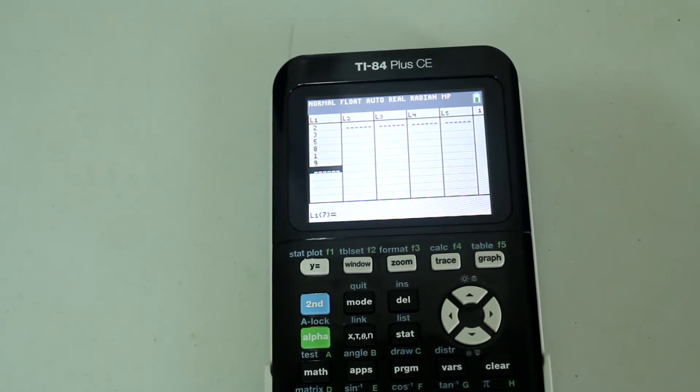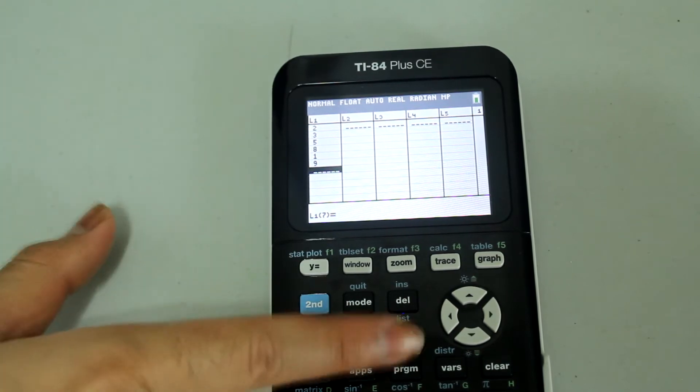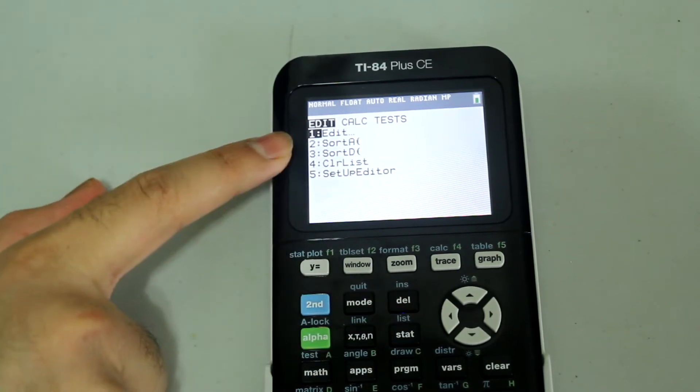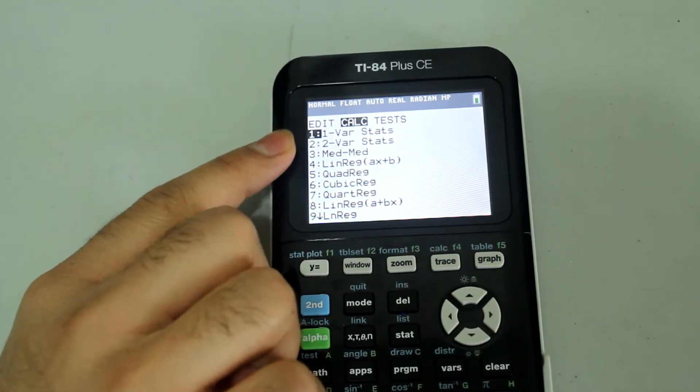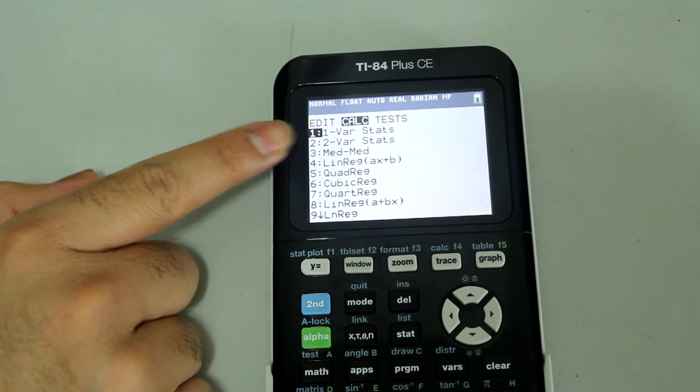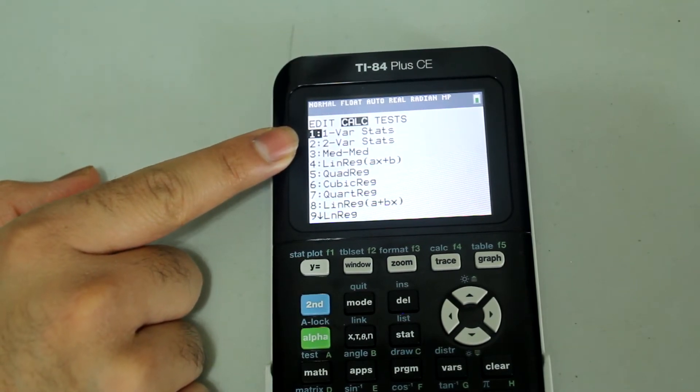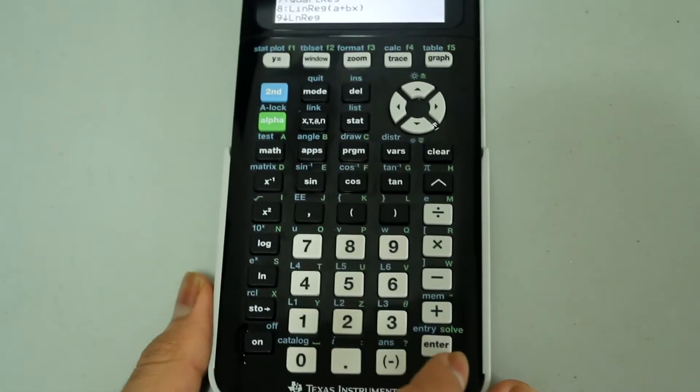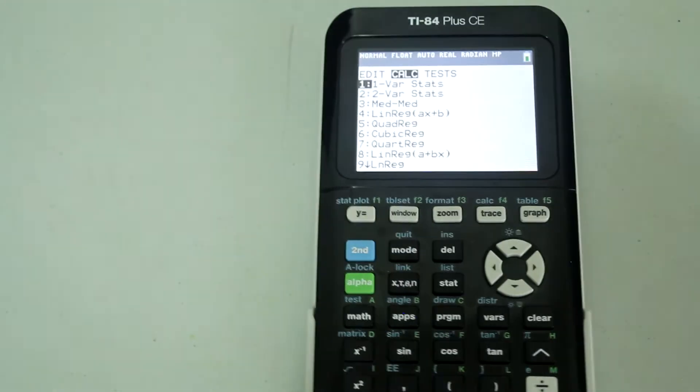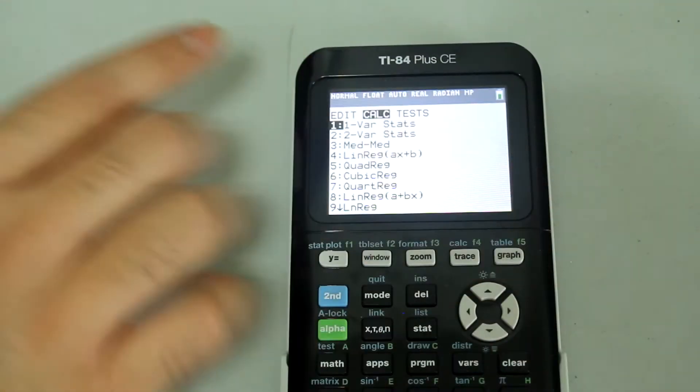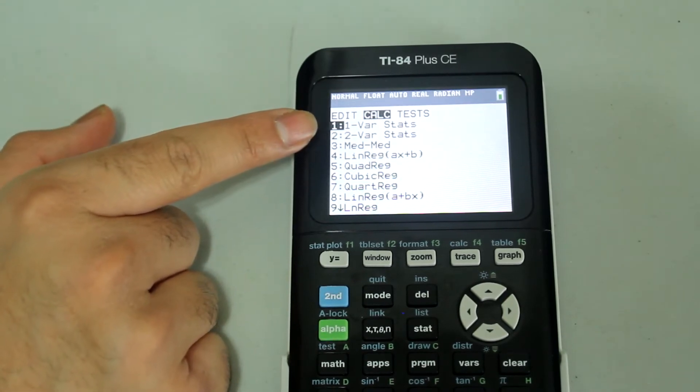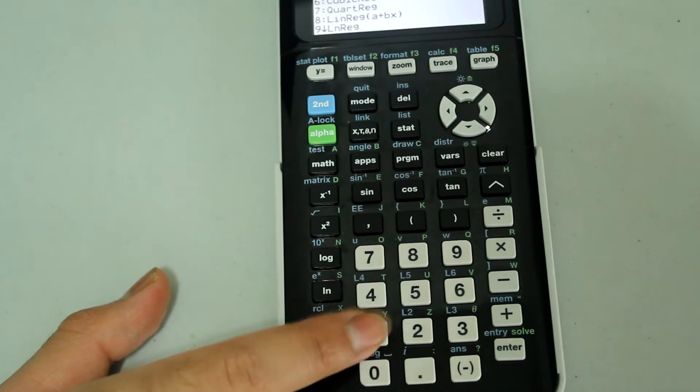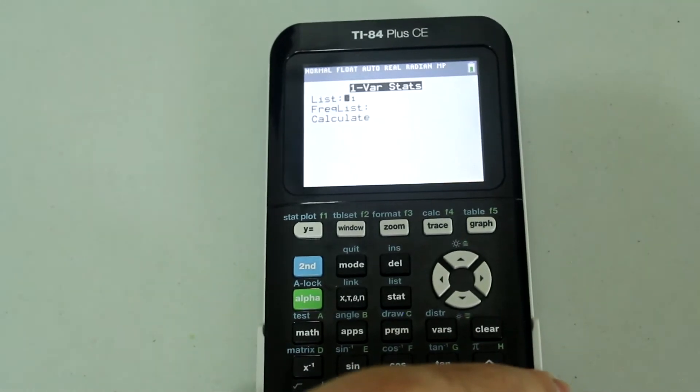Now in order to get statistical calculations, press the stat button, and this time we are going to arrow over to the calc tab. We are going to select 1 variable statistics and then press enter, or you could type in the corresponding number on the number pad. 1 variable statistics is number 1, so if you press number 1 on the number pad, it will select 1 variable statistics.